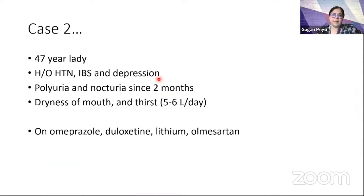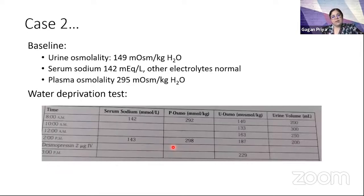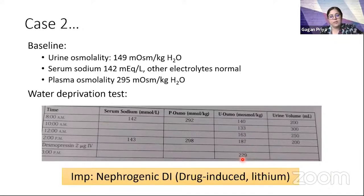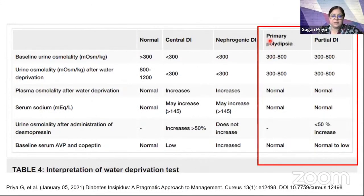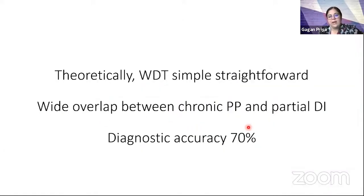The tricky part is partial forms of nephrogenic or central DI, where some urine concentration occurs and osmolality may rise between 300-800, and also patients with primary polydipsia who also partially concentrate urine. A case example: a lady with hypertension, IBS, and depression on omeprazole, duloxetine, lithium, and olmesartan, presenting with polyuria and nocturia for two months. Baseline urine osmolality was low, serum sodium normal, plasma osmolality slightly high-normal. On water deprivation she did not concentrate urine, and desmopressin produced only an insignificant change — diagnosing nephrogenic DI, likely lithium-induced.